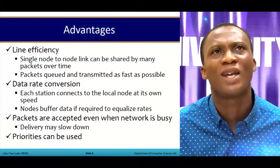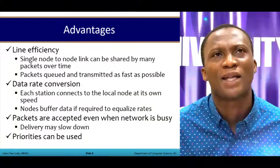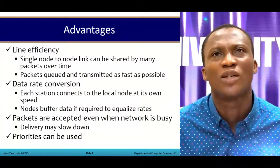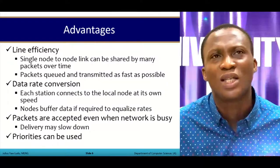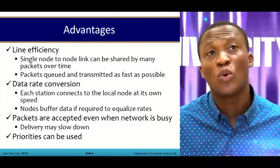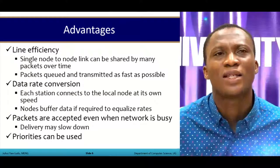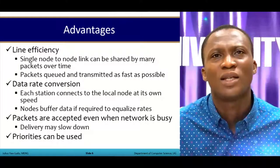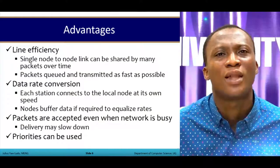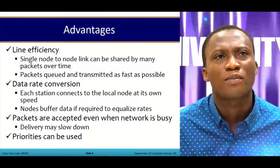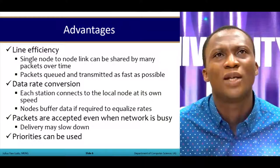What are the advantages? We have line efficiency — a single node-to-node link can be shared by many packets over time. Packets are queued and transmitted as fast as possible using buffers. There is also data rate conversion: each station connects to the local node at its own speed, and nodes buffer data if required to equalize rates. Packets are accepted even when the network is busy, though delivery may be slow — that's the only downside. Priorities can also be used.